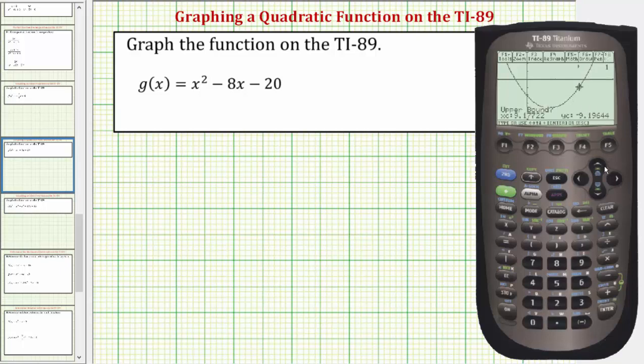Upper bound is going to be, in this case, above the horizontal intercept. Let's say here, enter. And now we know that the horizontal intercept on the right is the point ten comma zero.